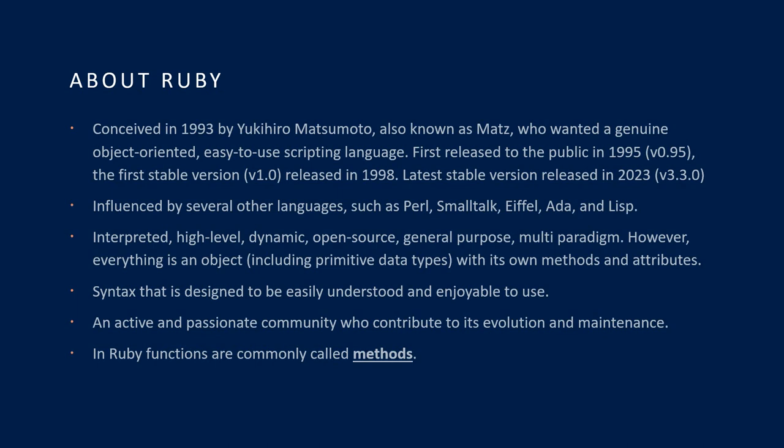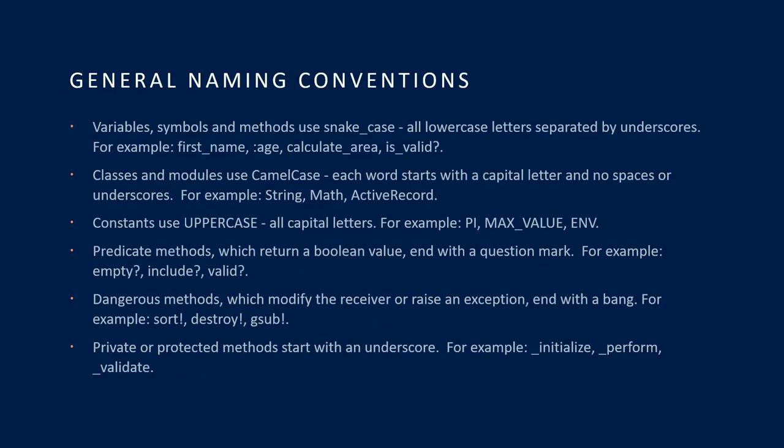In terms of the community, there's quite a bit of podcast stuff about Ruby — I'll include links in the description to those as well. I thought I'd start with general naming conventions, which is interesting with this language. Variables, symbols, and methods use snake_case — all lowercase letters separated by underscores. For example, 'first_name.' You'll notice that a symbol has a colon in front of it. Methods might look like 'calculate_area' or 'is_valid?' — that last one being a predicate method with a question mark.